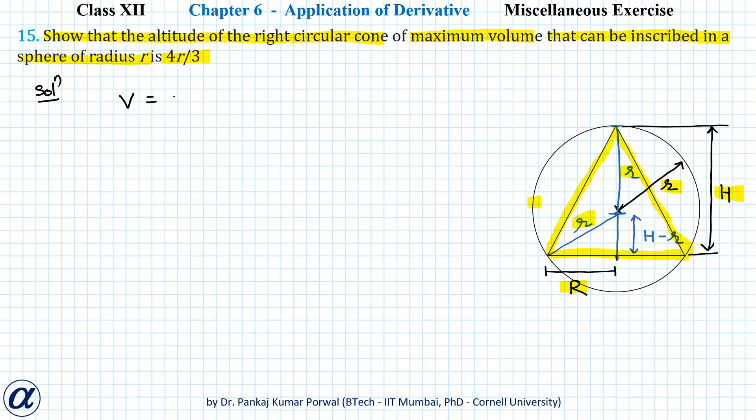So volume of the cone will be π/3 R²H and we need to maximize V, but there appears to be two variables R and H and we need to eliminate one of them using geometry of our problem.